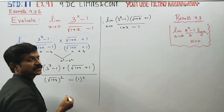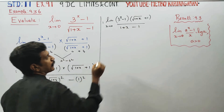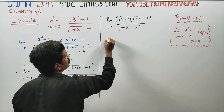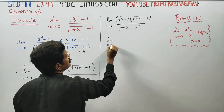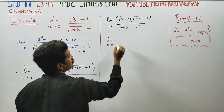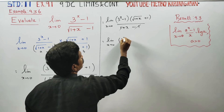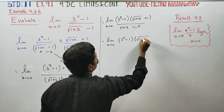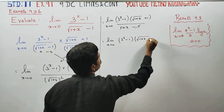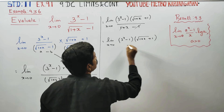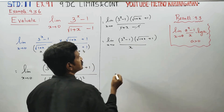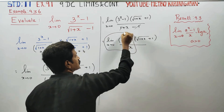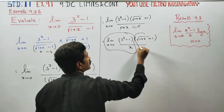1 squared is 1. Plus 1 minus 1 cancels, leaving x in the denominator. So limit x turns to 0: (3^x - 1) times (√(1+x) + 1) divided by x. It's the same limit form, ready to be split.